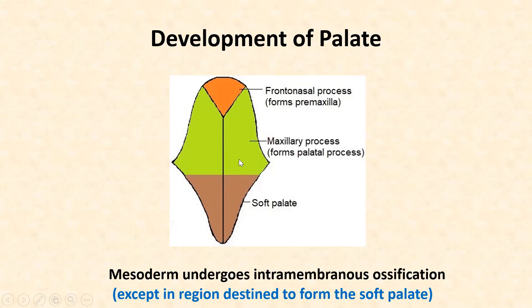The right and left palatal processes are plate-like shelves arising from each maxillary process. Fusion begins anteriorly and extends posteriorly. Later, the mesoderm of the palate undergoes intramembranous ossification to form the hard palate. The most posterior part where ossification has not extended remains soft and is referred to as the soft palate.